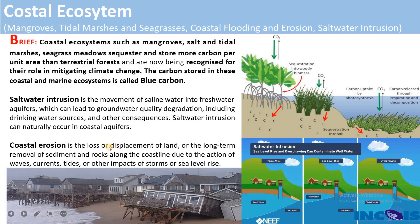Coastal erosion is the loss or displacement of land from beaches because of the action of waves, currents, tides, or the impacts of storms or sea level rise on the coast. The key concepts we will cover in coastal ecosystems include mangroves, tidal marshes, seagrass, coastlines, and saltwater intrusion.